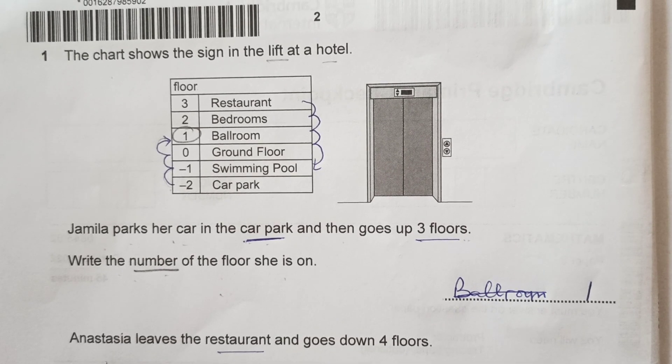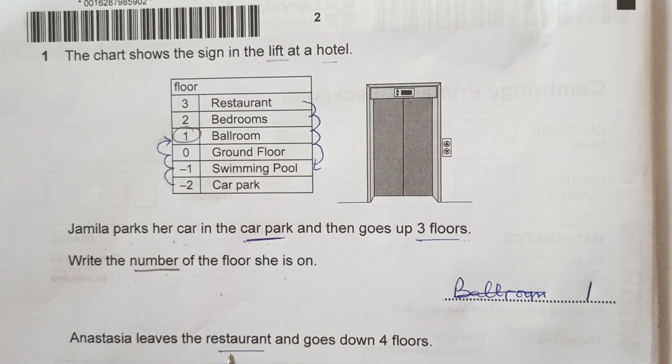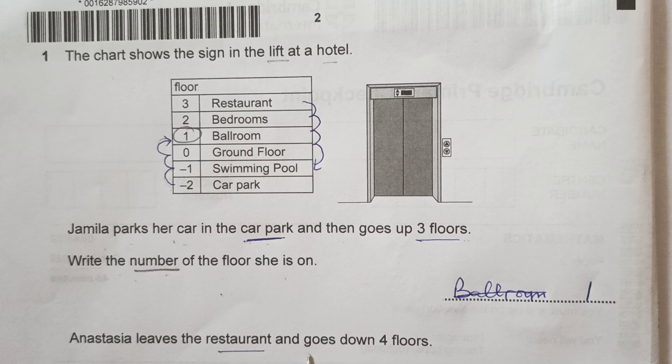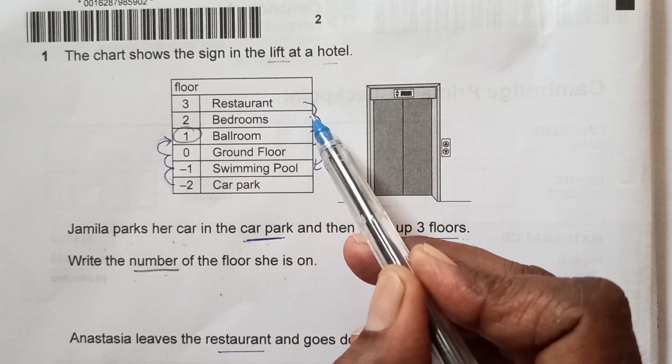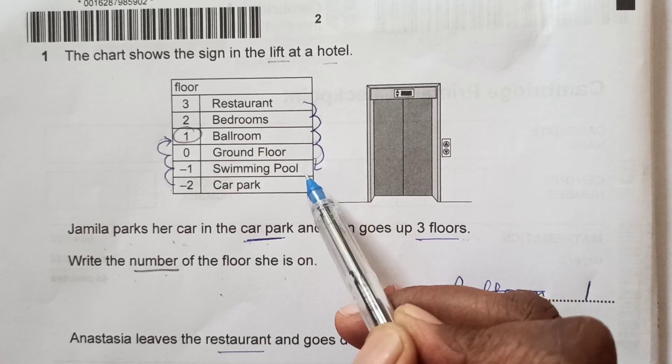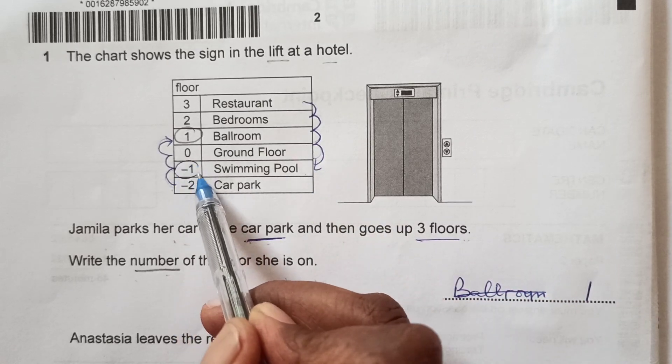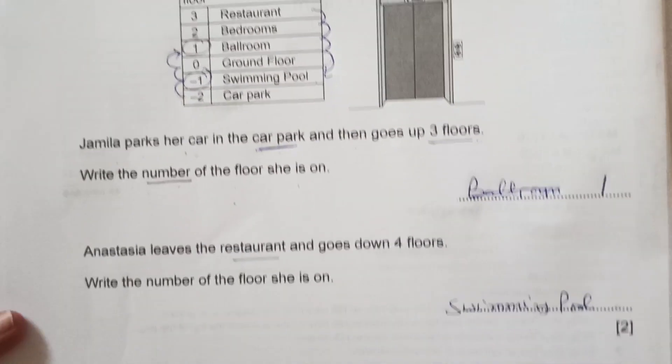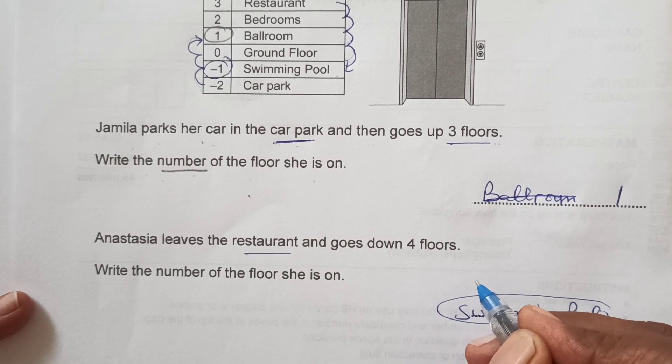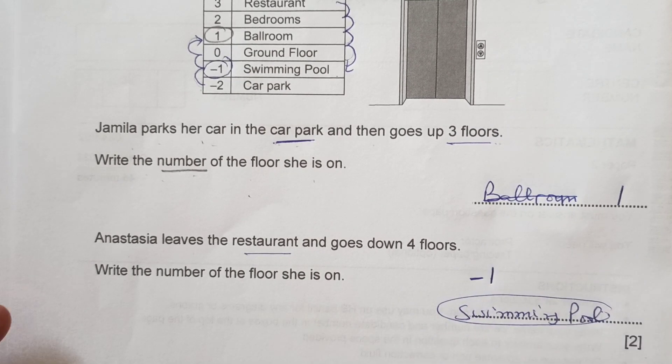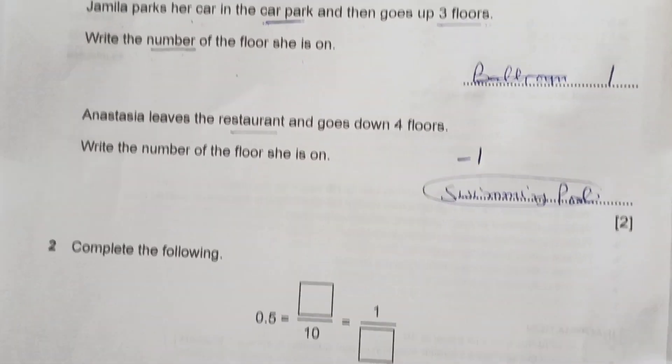Now, Anastasia leaves the restaurant and goes down 4 floors. Restaurant is here, 4 floors down: 1, 2, 3 and 4. She is at swimming pool. What number is that? That is minus 1. Here swimming pool is there but we will write down minus 1.